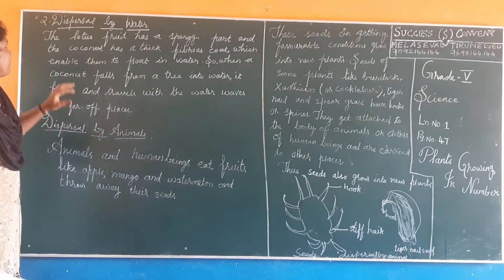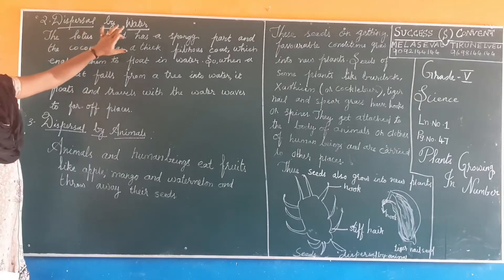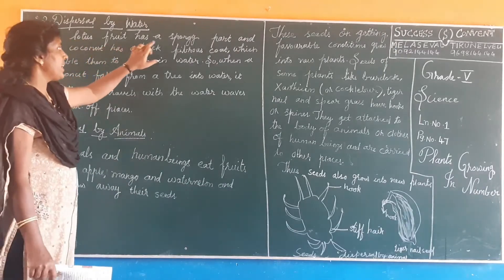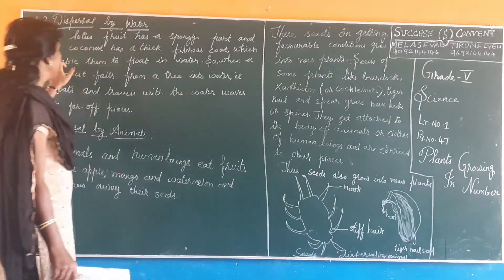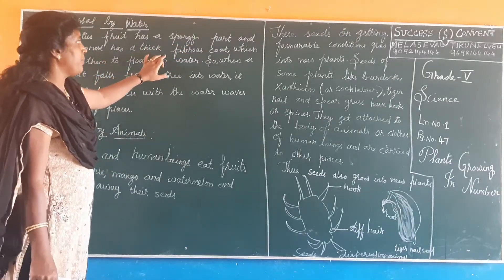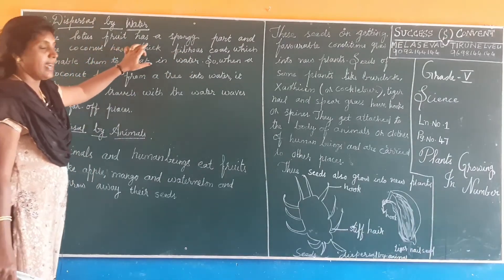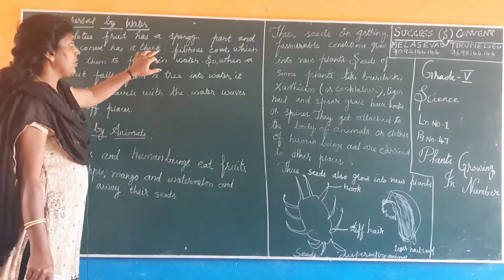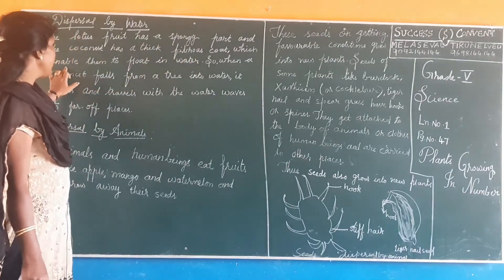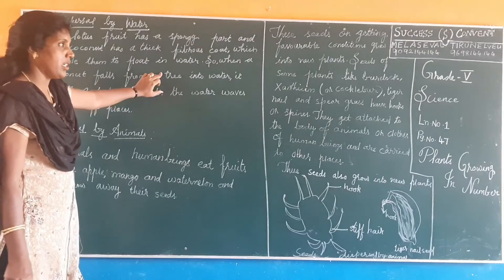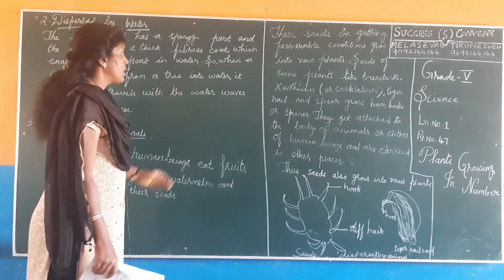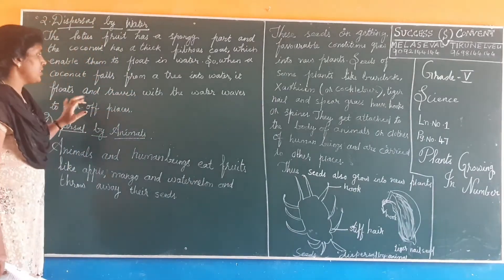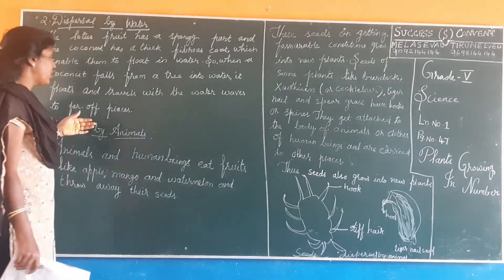You can take page number 47. Dispersal by water. The lotus fruit has a spongy part and the coconut has a thick fibrous coat, which enable them to float in water. So when a coconut falls from a tree into water, it floats and travels with the water waves to far off places.